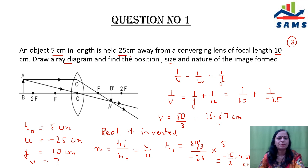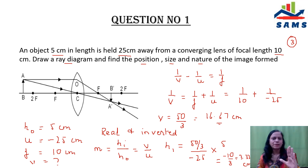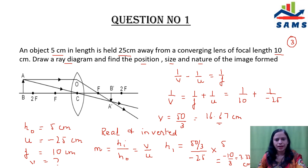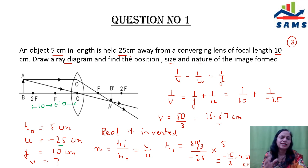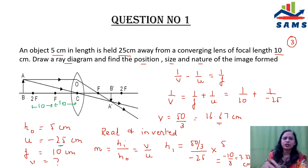Now let me explain why we draw this particular ray diagram. The object distance is 25 cm and the focal length is 10 cm, so twice the focal length is 20 cm. Since the object is placed at 25 cm, it is placed beyond 2f. So you draw the ray diagram for a convex lens when the object is placed beyond 2f. This is how you approach such questions.